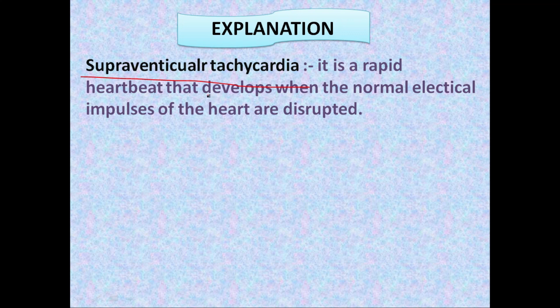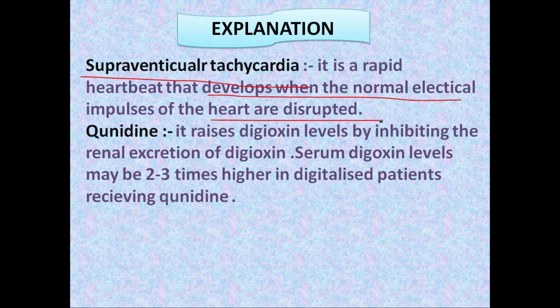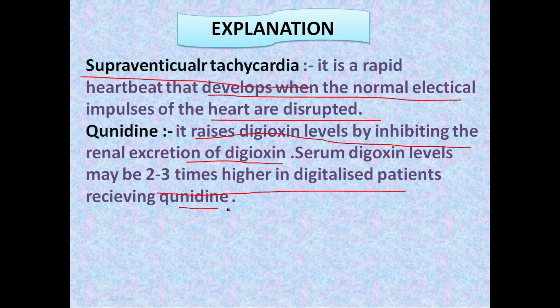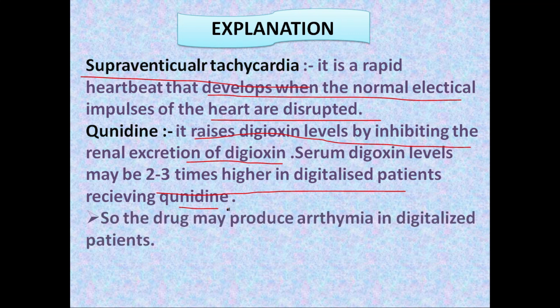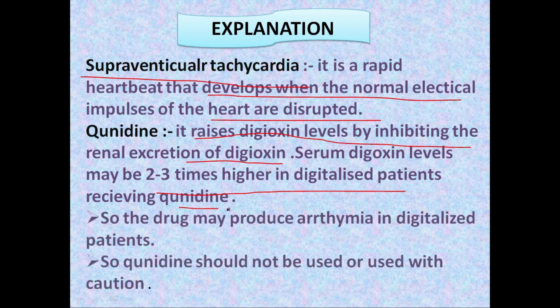Supraventricular tachycardia arrhythmia is a rapid heartbeat that develops when the normal electrical impulses of the heart are disrupted. Regarding quinidine: it raises digoxin levels by inhibiting the renal excretion of digoxin. Digoxin levels may increase two to three times higher in digitalis patients receiving quinidine, which may produce arrhythmia. Quinidine should not be used or should be used with precautions.